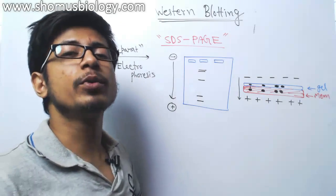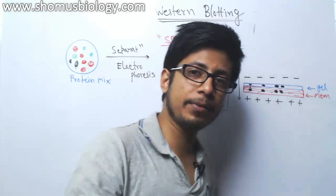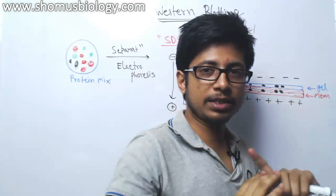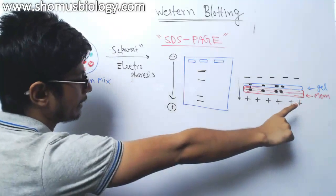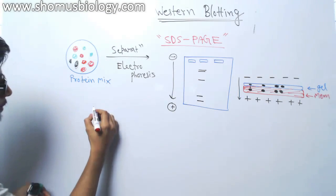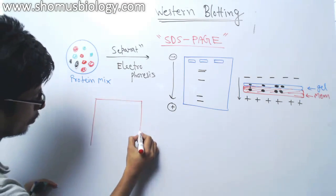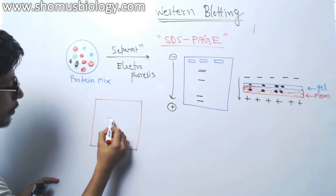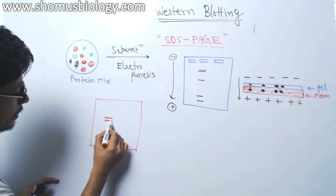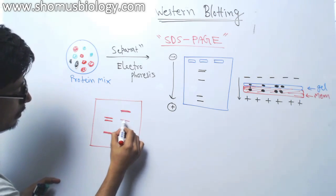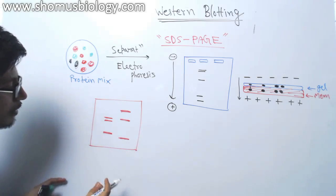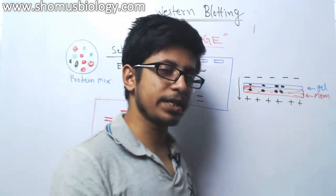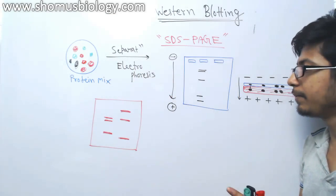Once the transfer is complete, we take the membrane. On this membrane we can see different regions of protein bands. Then the third important stage is probing and hybridization. In the case of DNA and RNA blotting, we use complementary strands for hybridization. But in this case, hybridization would not work because it is protein, so we need to use a detector that can go and bind to the specific target protein of interest.